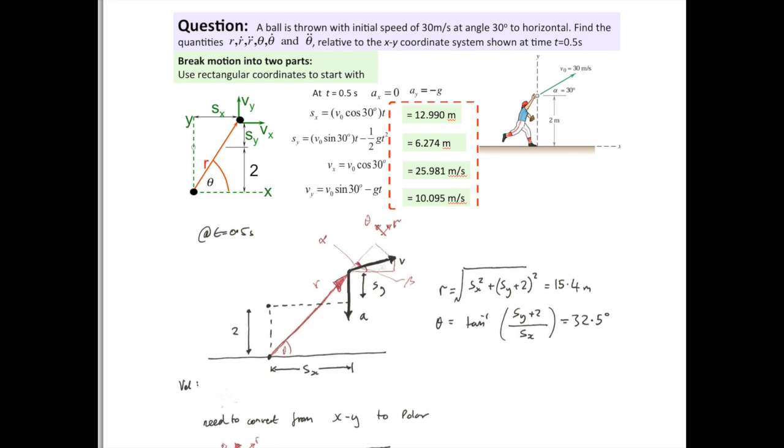Now, we've shown that a ball is going to be thrown from an initial height of 2 meters, which is here, and it's thrown with an angle of 30 degrees with a speed of 30 meters per second. Now, you're first asked to find the position of the ball half a second later, so this ball is then projected.